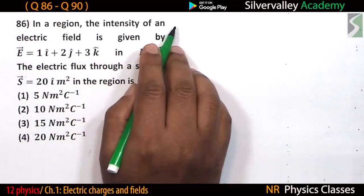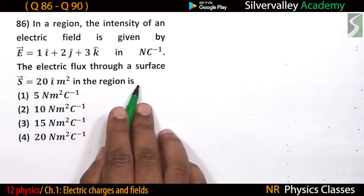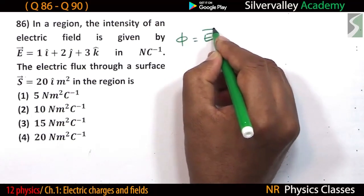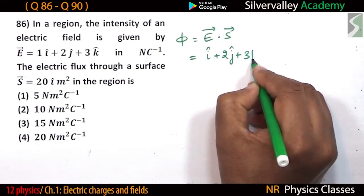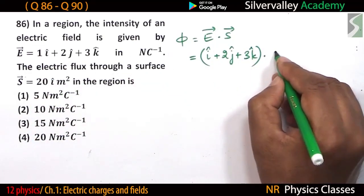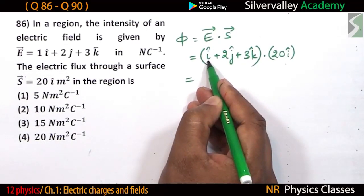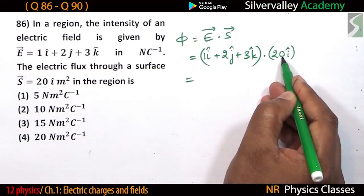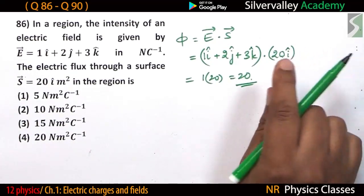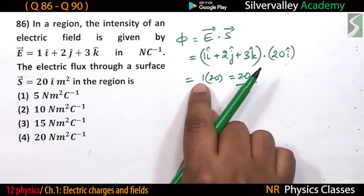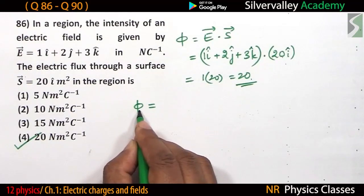In a region the electric field is given by E equals i-cap plus 2j-cap plus 3k-cap. The electric flux through a surface in the region is the dot product of electric field and area vector. E dot A equals (i-cap plus 2j-cap plus 3k-cap) dotted with 20i-cap. The coefficient of i-cap is 1, and 1 times 20 equals 20. There are no y and z components of area, therefore flux equals 20 SI units.